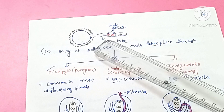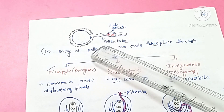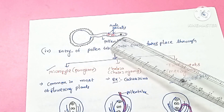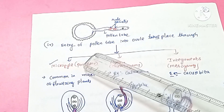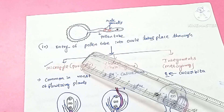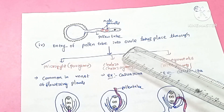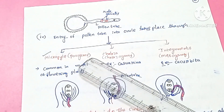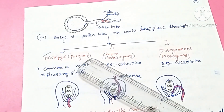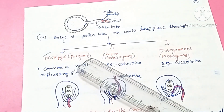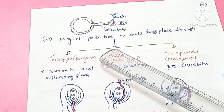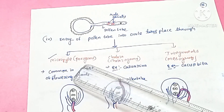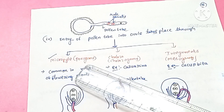The pollen tube structure travels all the way to the ovule — from the stigma, through the style, to the ovary, and then to the ovules. There are three ways by which the pollen tube can enter the ovule.